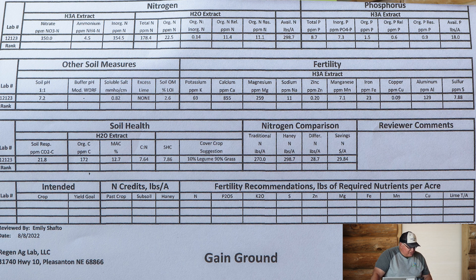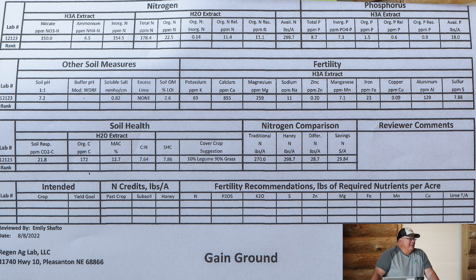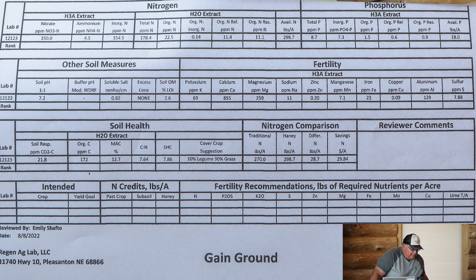Looking at other soil measures on the high-nitrate-nitrogen test — soluble salts at 0.82, that's really getting high. They're going to have an issue. That's coming from all the synthetic fertilizer, having a negative impact on soil biology with those high salt levels.